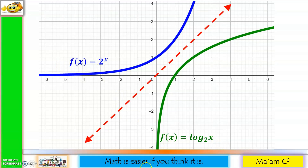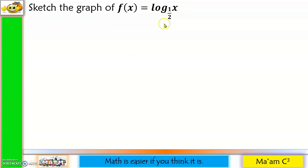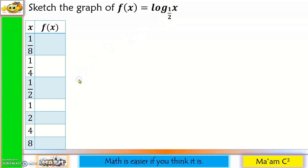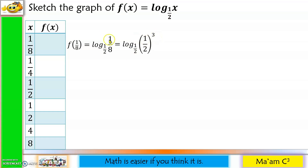Now let us graph f(x) = log base 1/2 of x. Let's have our table of values. Again, x must be greater than 0. Starting with x = 1/8: f(1/8) = log base 1/2 of 1/8. I'll express 1/8 as (1/2) raised to the third power — since 1 cubed = 1 and 2 cubed = 8 — so x equals b, and the answer is the exponent, which is 3.